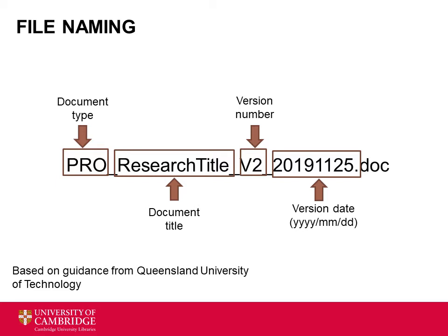Make any file names consistent and meaningful to you, and to anyone else who may need to access them, so that when you come back to them in the future you can see at a glance what each file is. You can use dates and version numbers to keep track of what version a file is, or if you need more support for version control, you can use services like GitHub. If you're working as part of a research group, it's important that everyone uses the same file naming convention — for example, showing the document type, title, version, and date.